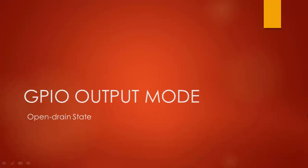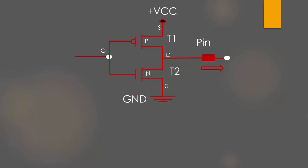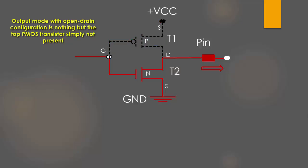Now let's understand the GPIO output mode with open drain configuration. As you know, when the GPIO is in output mode, it looks something like this. Open drain output configuration is nothing but the top PMOS transistor being deactivated—it is simply not present.